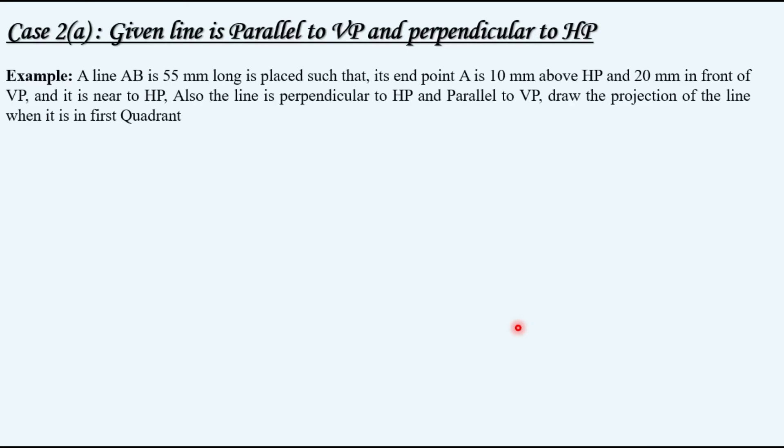In order to have a better understanding, let's have an example. A line AB is 55 mm long, placed such that its endpoint A is 10 mm above HP and 20 mm in front of VP, and it is near to HP. Also the line is perpendicular to HP and parallel to VP. Draw the projections of the line when it is in first quadrant.